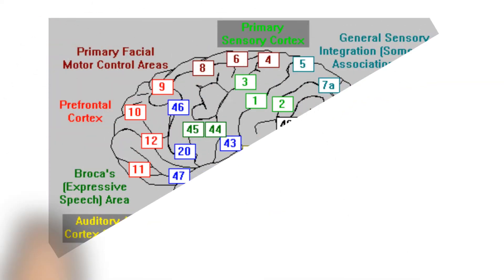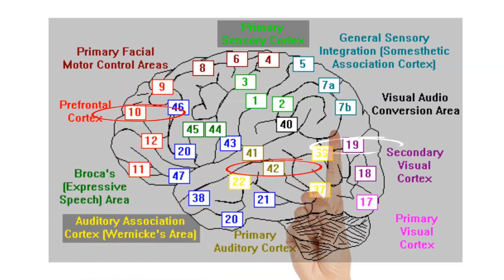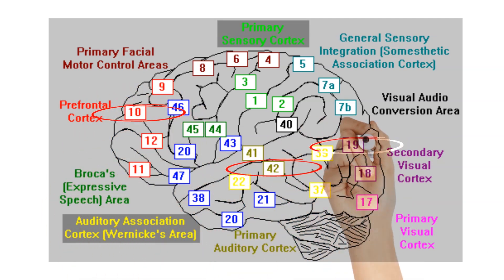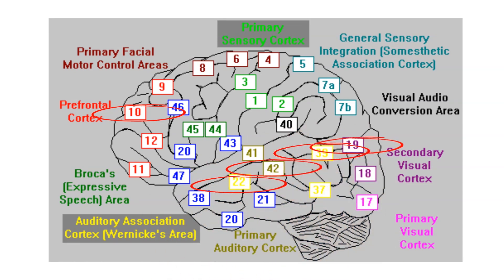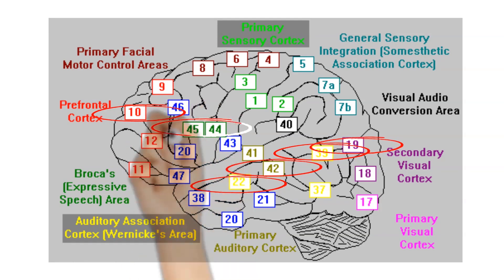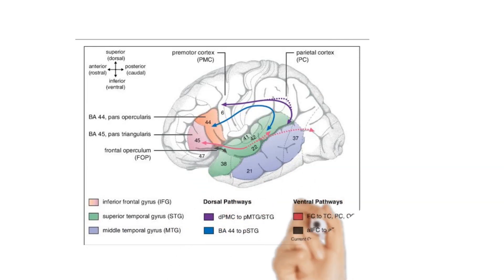Now let me tell you about the speech centers. There are six speech centers: the auditory association area (area 42), the visual association area (areas 18 and 19), the Wernicke's area (area 22), the angular gyrus (area 39), Broca's area (areas 44 and 45), and the hand skilled area, which is located in the pre-motor area.